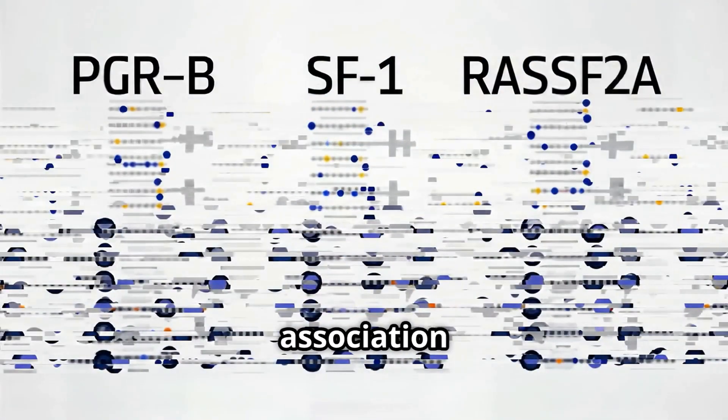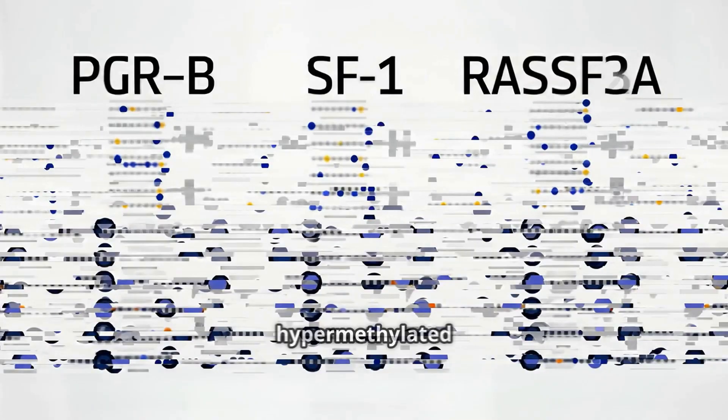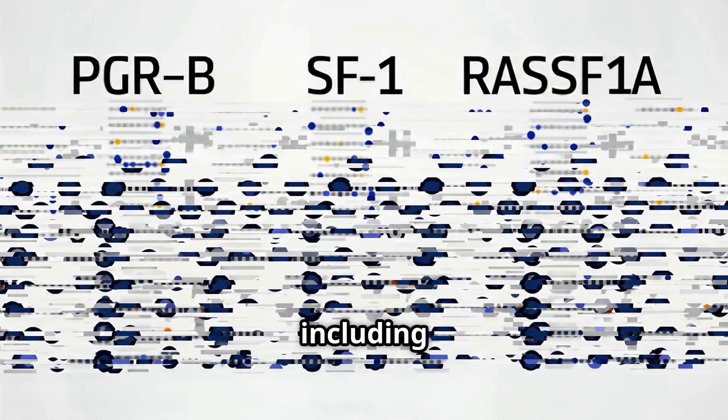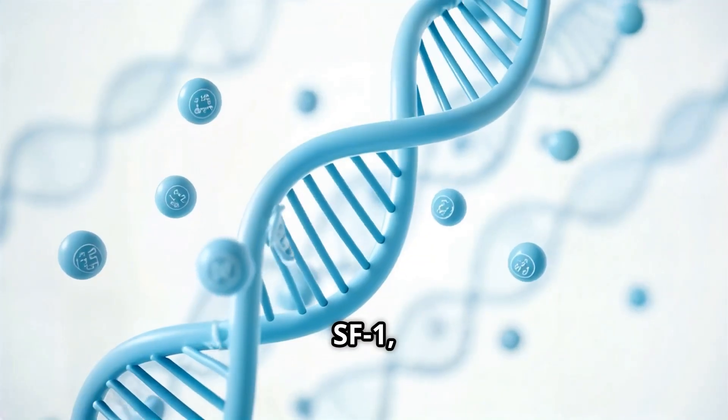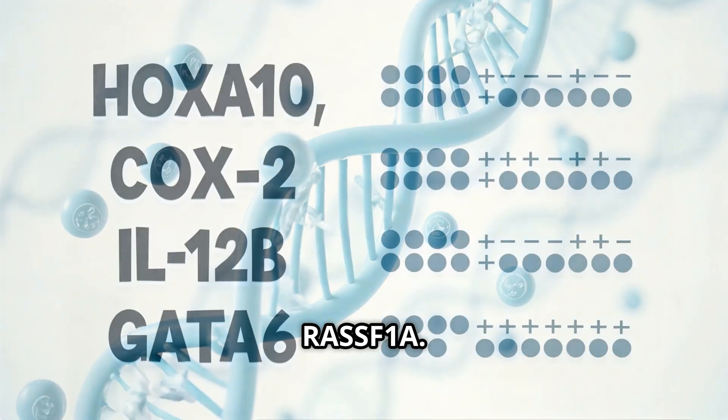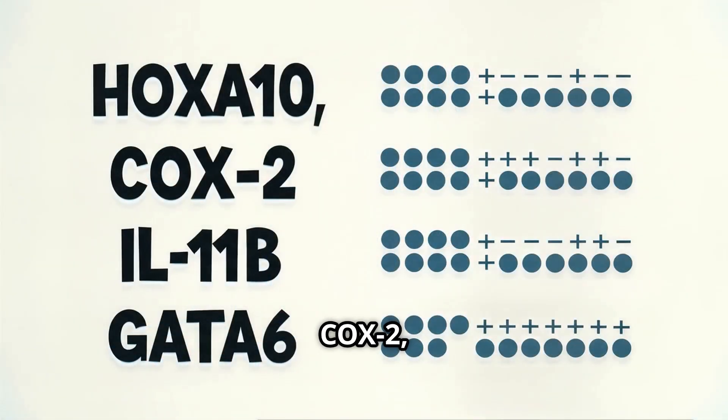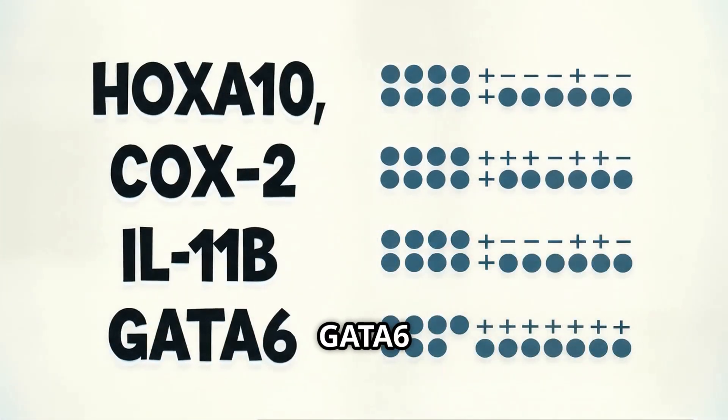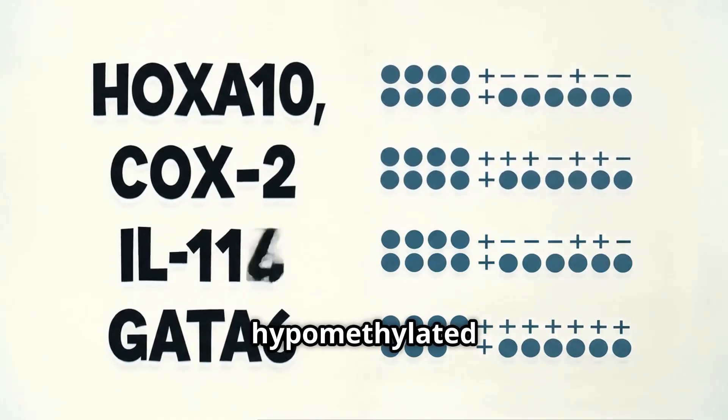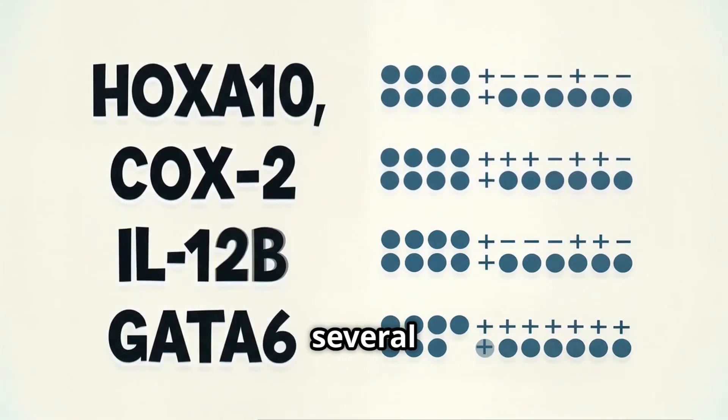These studies identified an association between endometriosis and hypermethylated genes, including PGRB-SF1 and RASF1A. The genes HOXA10, COX2, IL-12B, and GATA6 were found to be hypomethylated in endometriotic tissue in several studies.